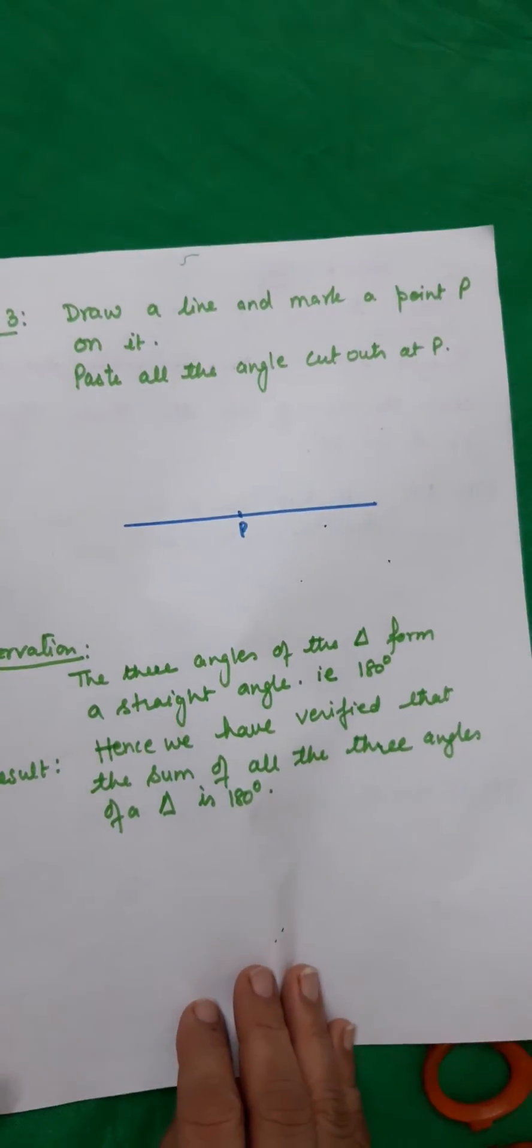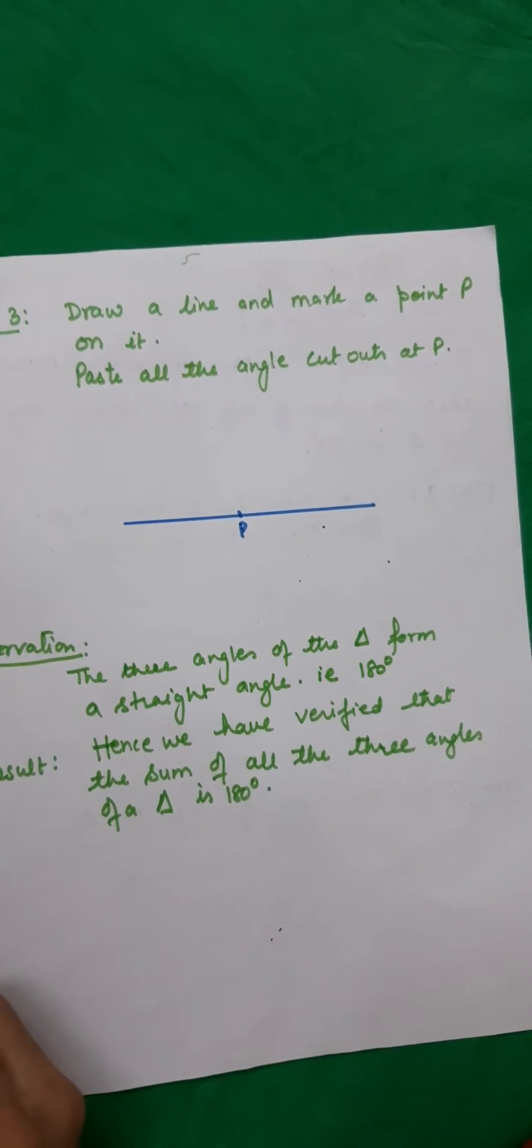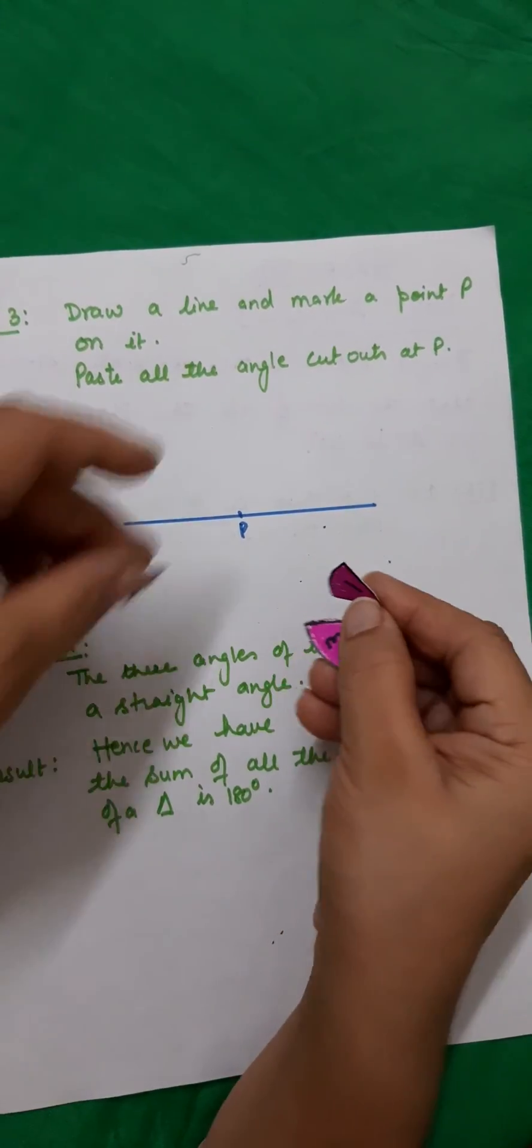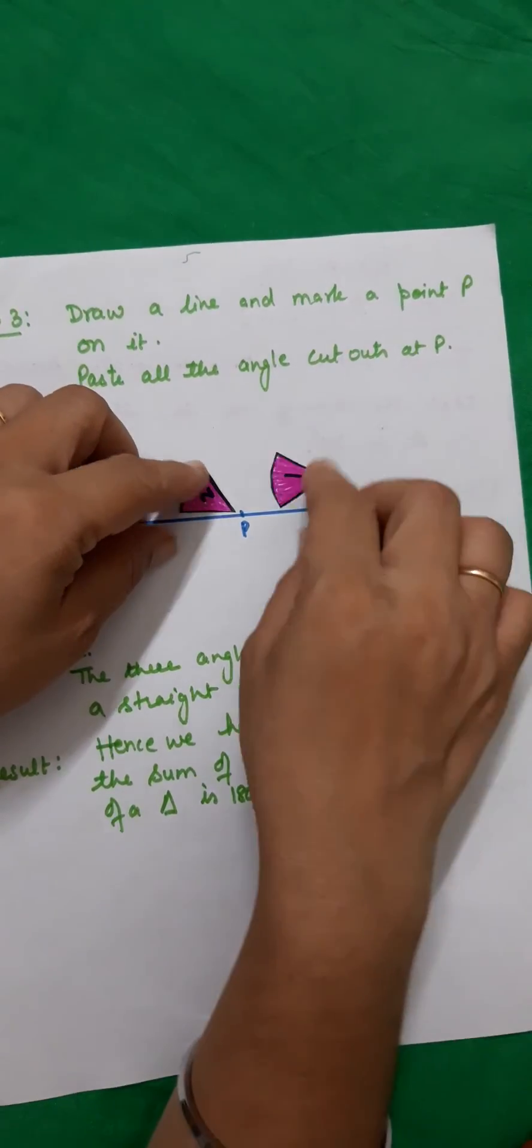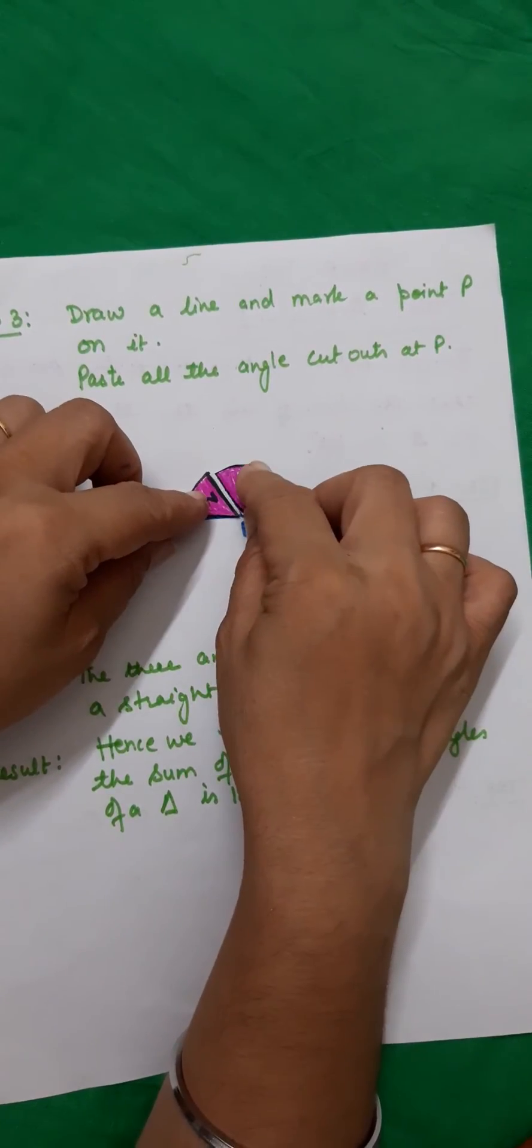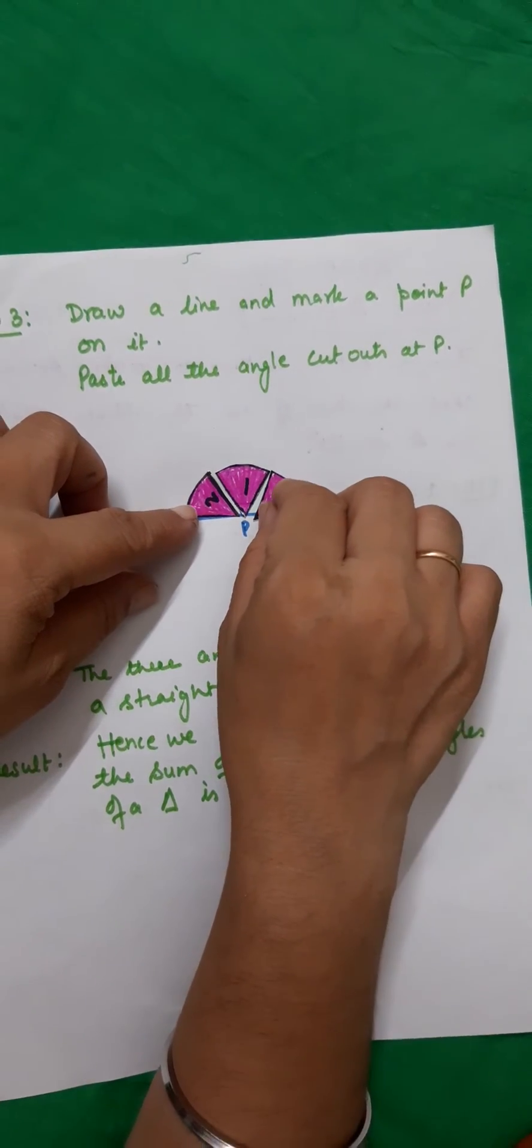Draw a line and mark a point P on it. Paste all these three angle cutouts at P. Order does not matter. You can place them in any order that you want and paste them.